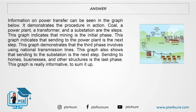This graph indicates that mining is the initial phase, and sending to the power plant is the next step. The third phase involves using national transmission lines, followed by sending to the substation. Sending to homes, businesses, and other structures is the last phase. This graph is really informative, to sum it up.